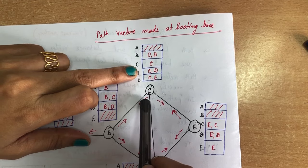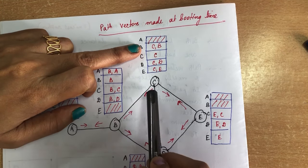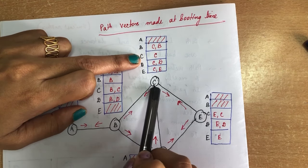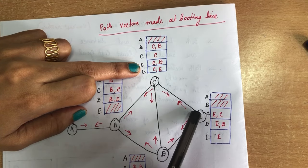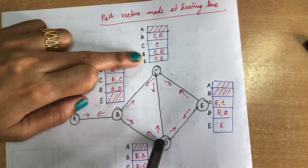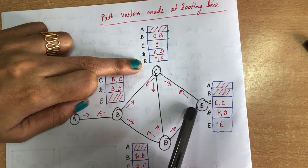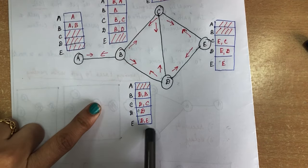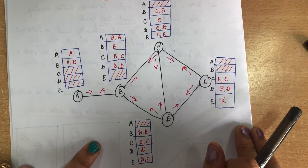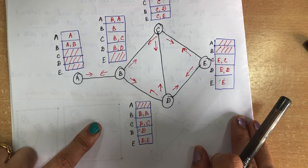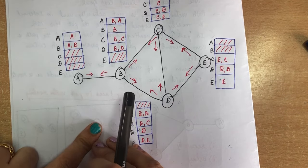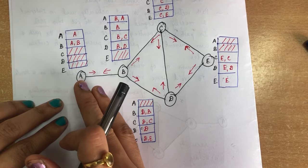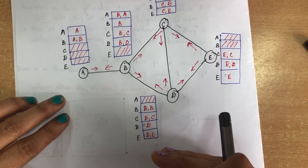For C's path vector: there is no direct path to A; to reach B it goes C to B; C itself for reaching C; C, D for reaching D; and C, E for reaching E. Similarly, path vectors are found for D and E as well. These are the path vectors created during node booting time. After the node has been booted and these path vectors have been created, they will be sent to the nearby neighbors to update the information.